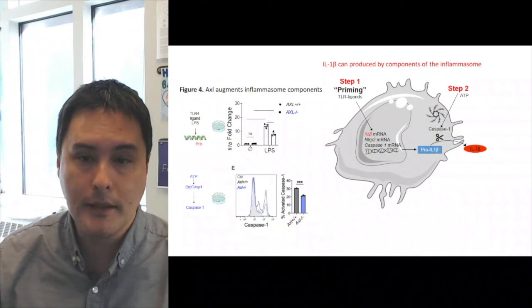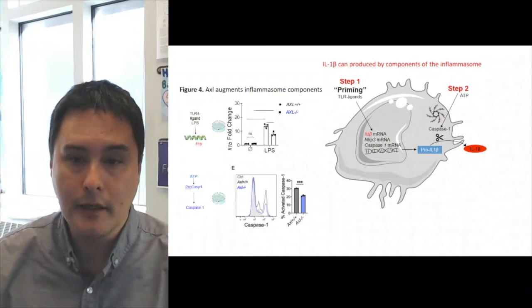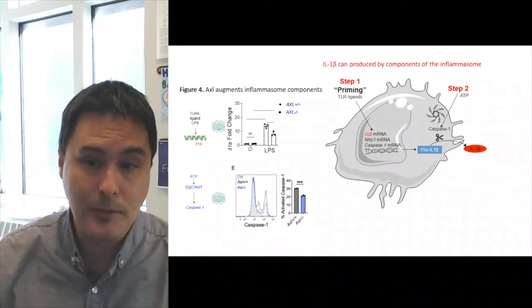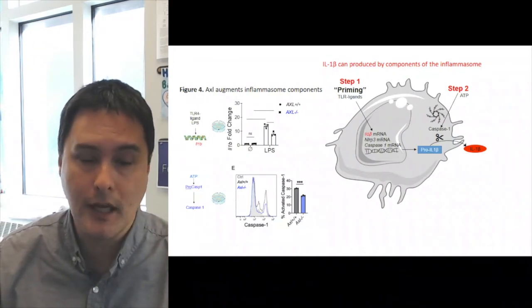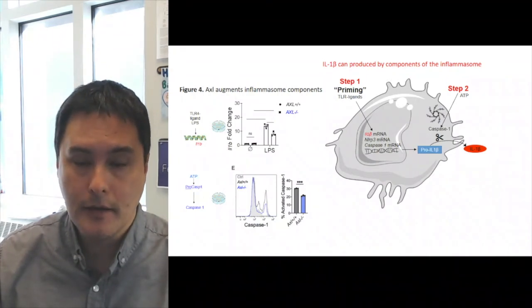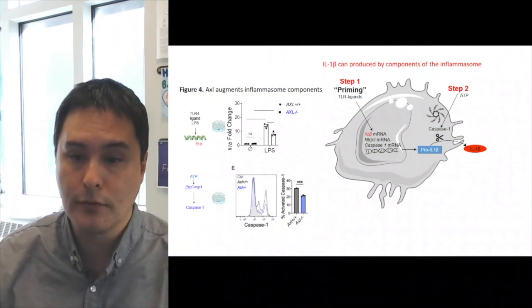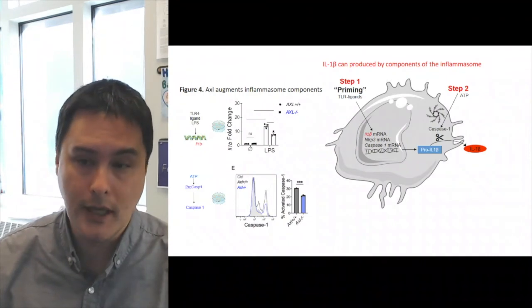In figure four Matt discovered that indeed AXL augments inflammasome components. When he added TLR4 ligand LPS and measured IL-1 beta transcription, this was significantly reduced in the absence of AXL. Furthermore, if he added this activation factor ATP and measured the conversion of pro-caspase to caspase 1 in its mature form, this was also reduced in the absence of AXL.